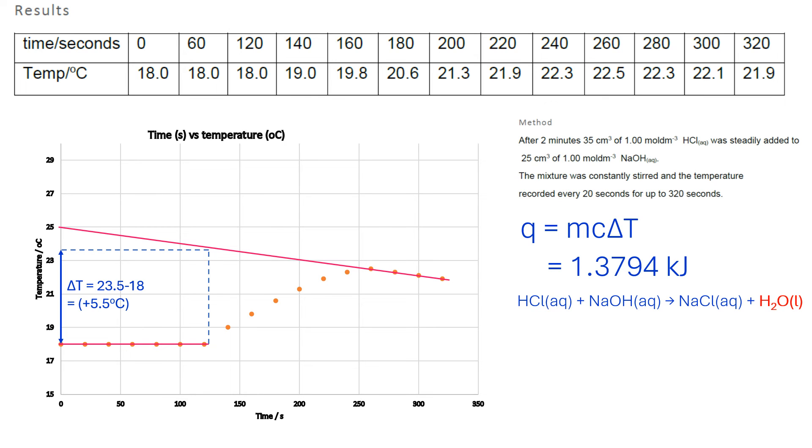Going back to our equation, what we're interested in is the moles of water that's made. Looking at our two reactants, HCl and NaOH, the limiting reagent controls how much H₂O is made. That means 0.025 moles of water is made.